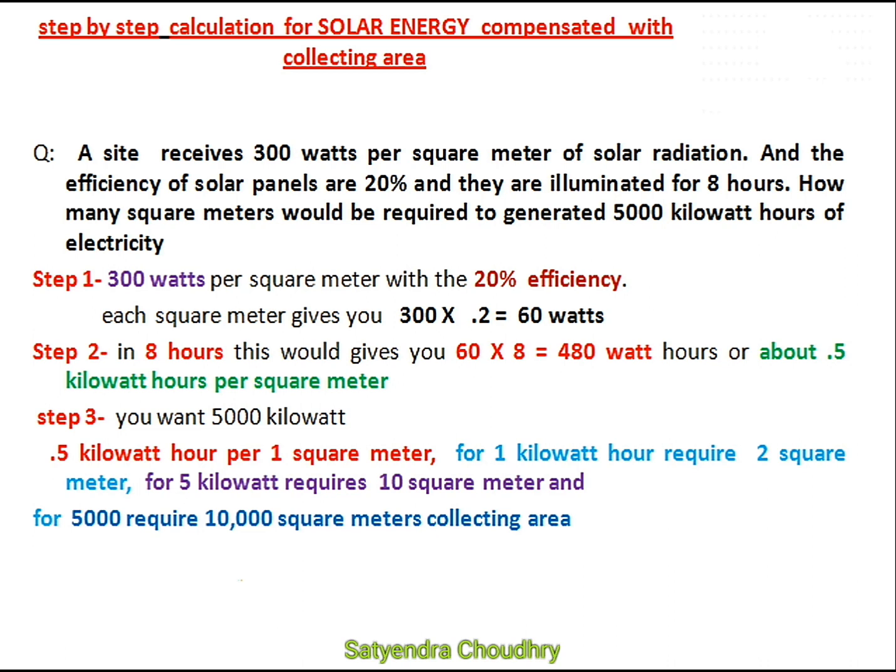Finally, we will calculate the total area required to generate 5000 kilowatts of energy. As you know, 2 square meters will be required to produce 1 kilowatt of energy. And for 5000 kilowatts, we will require 10,000 square meters of collecting area.